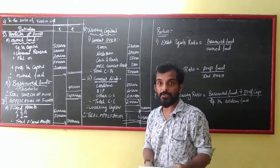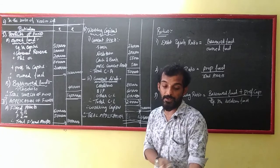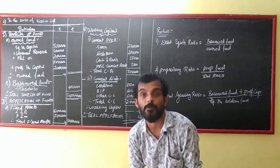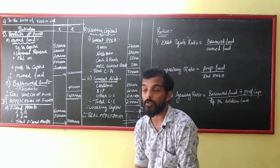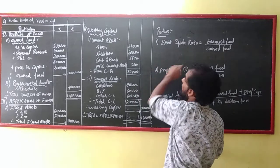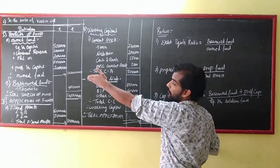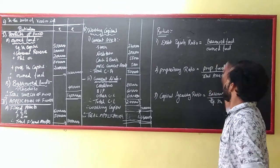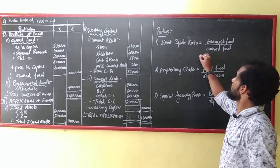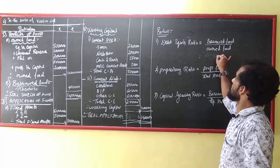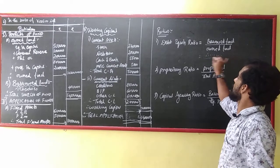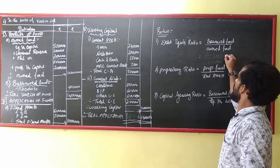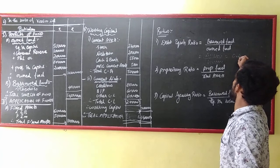Ab mujhe kya nahi sahip ratio. So, pahla — debt equity ratio. So, debt equity ratio is what? Borrowed fund upon own fund. Okay, borrowed fund kitna hai? 4 lakhs. Correct? So 4 lakhs upon 10 lakhs. That is equal to 0.4.